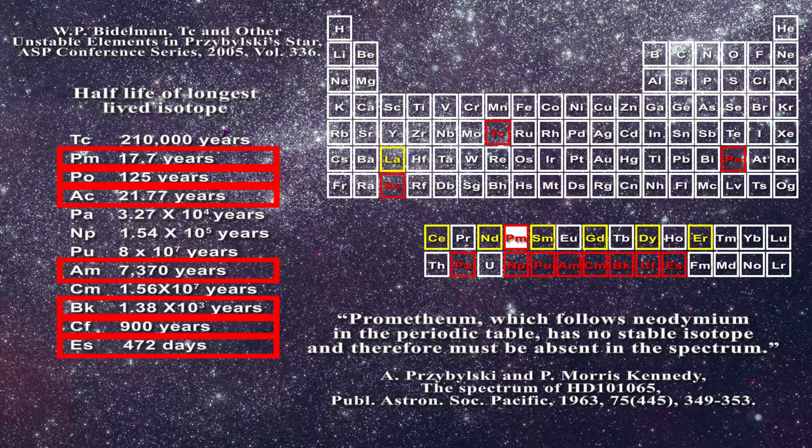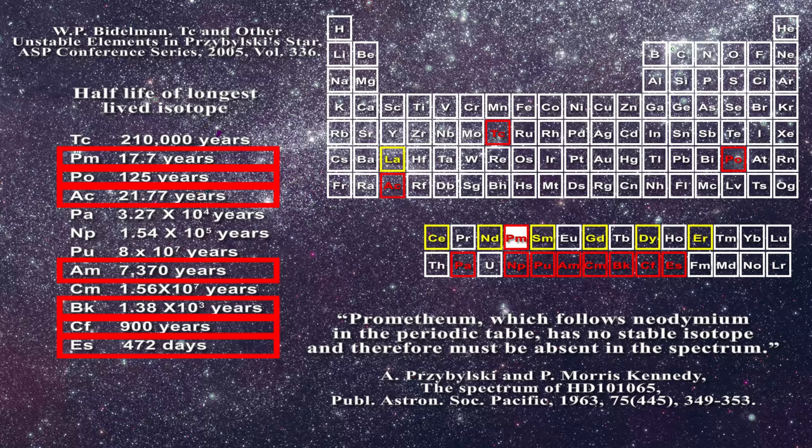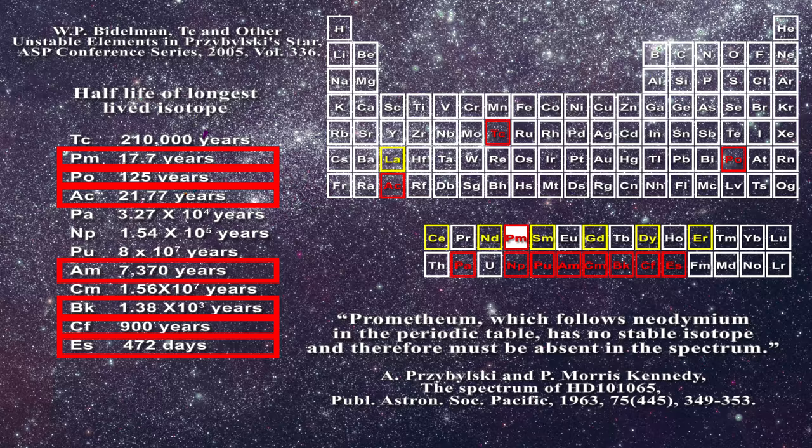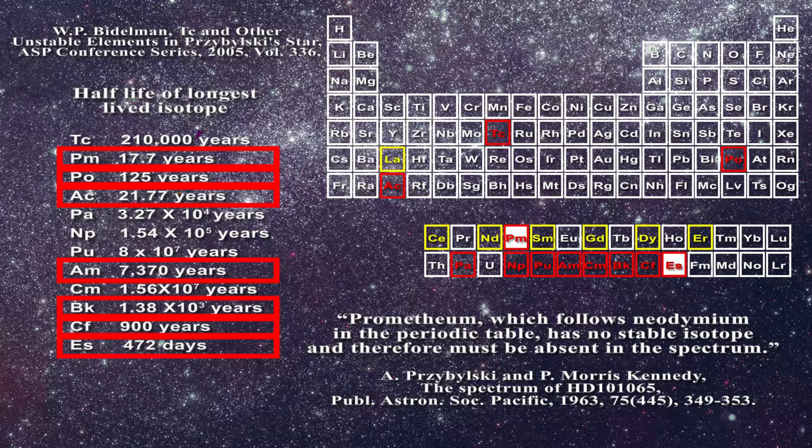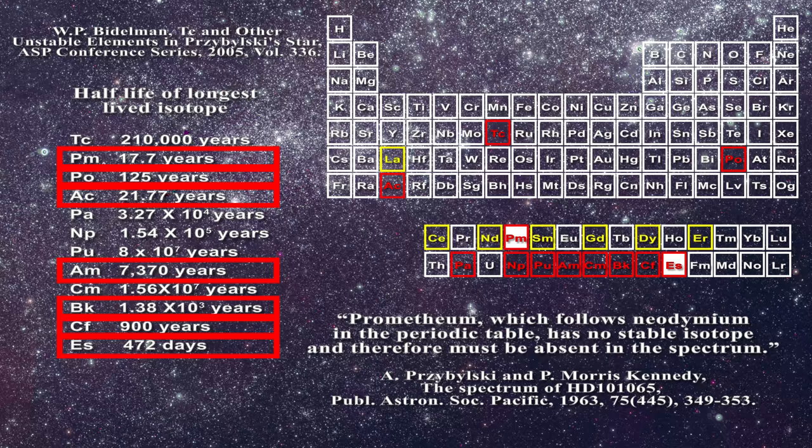That is why Przybylzki wrote this sentence. On the scale of star formation times, it is impossible to conceive how these elements could possibly exist on Przybylzki's star. The longest-lived isotope of Promethium has a half-life of only 17.7 years, which is a blink of an eye in the life of a star. The longest-lived isotope of Einsteinium only has a half-life of 472 days. Only a few of these elements might survive long enough to be seen and only if they were made in enormous quantities by the proposed first-generation star, which is highly unlikely.